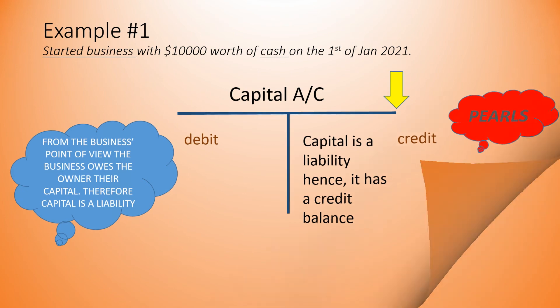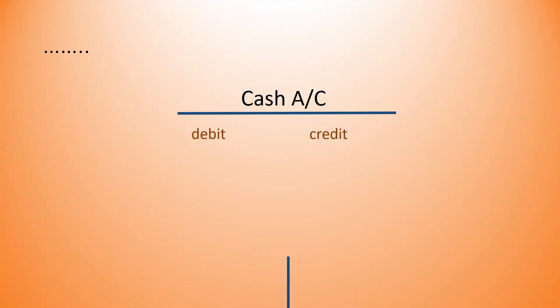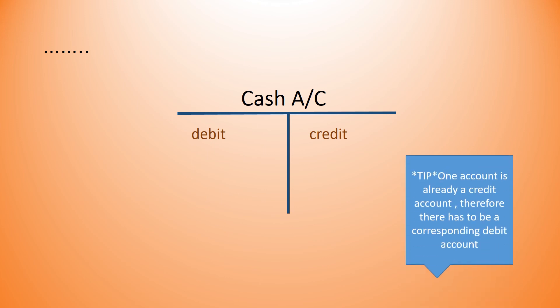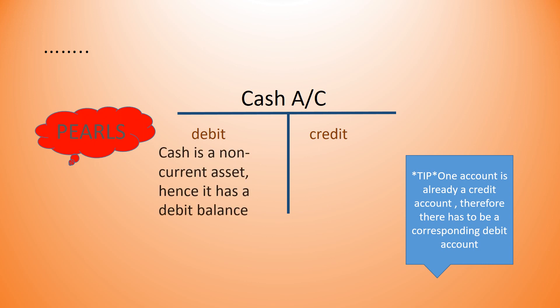Determining the nature of the cash account is quite easy now. The capital account is already a credit account, therefore there has to be a corresponding debit account, which in this case is the cash account. In case you still need to use the PROLs rule, remember that cash is a non-current asset and it has a debit balance.